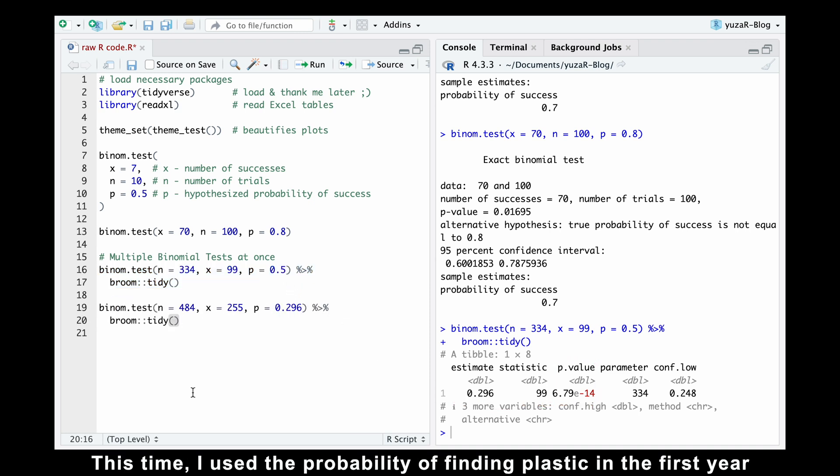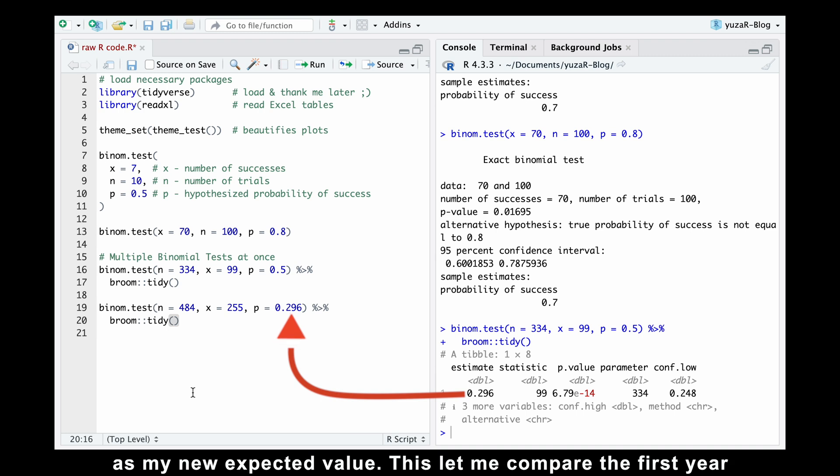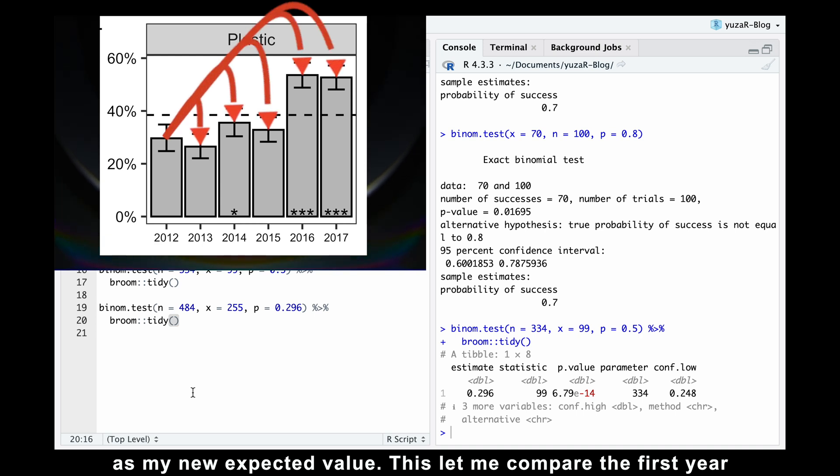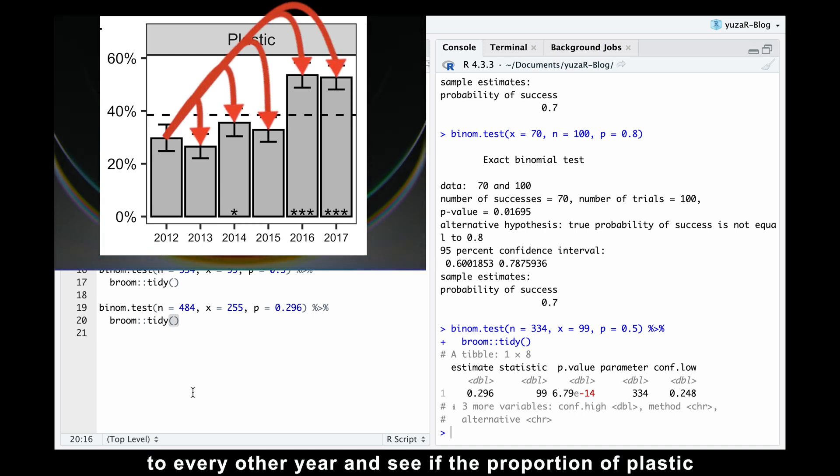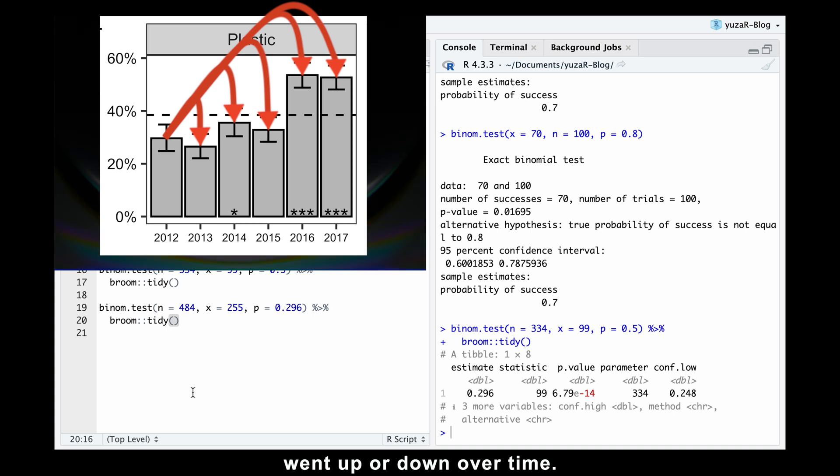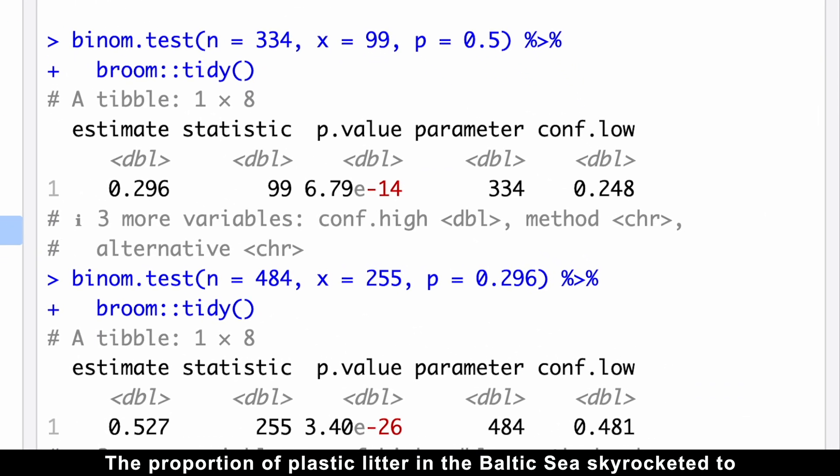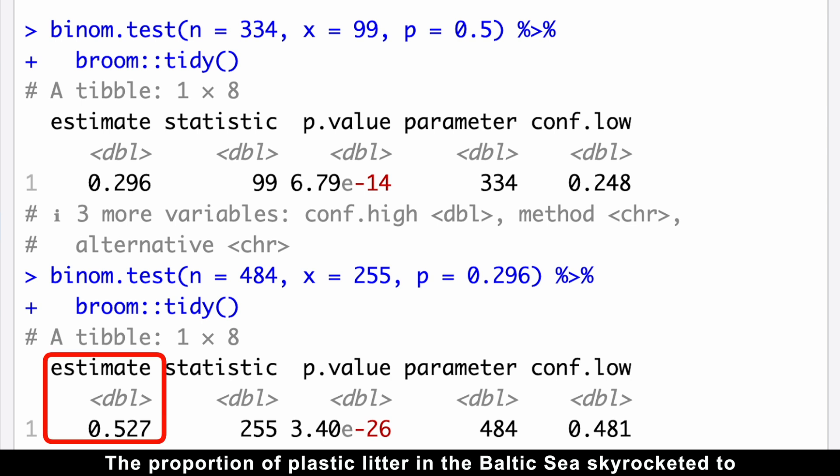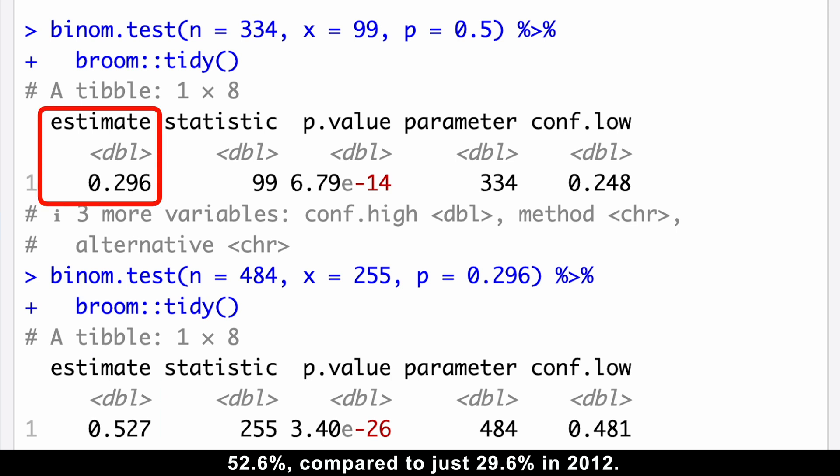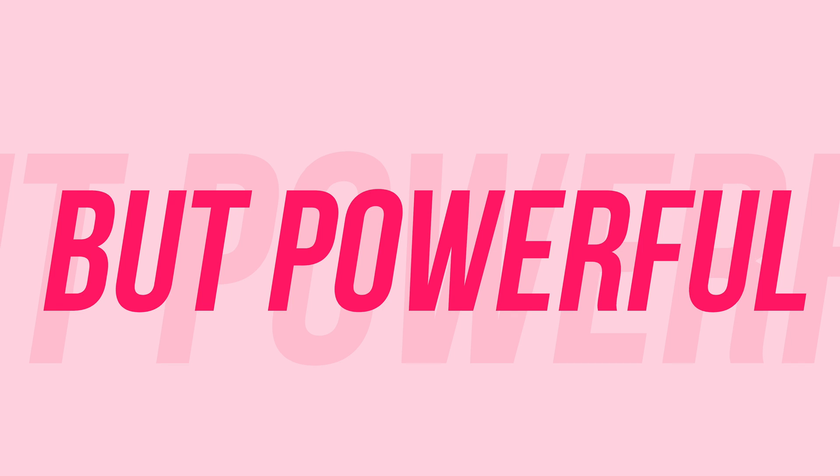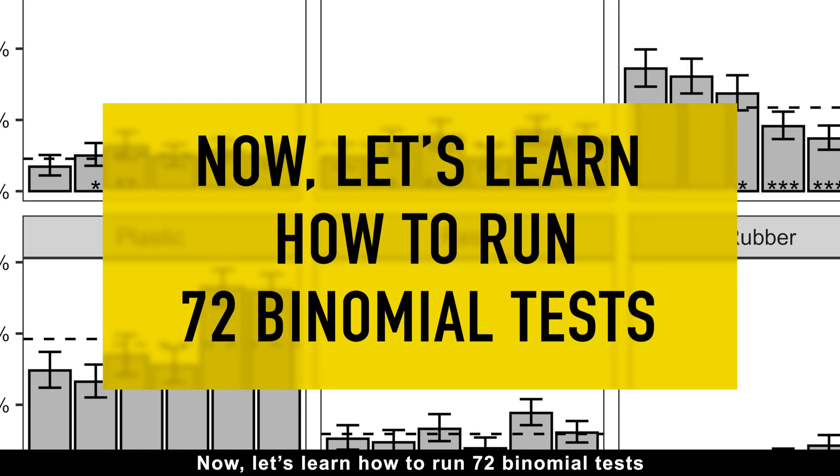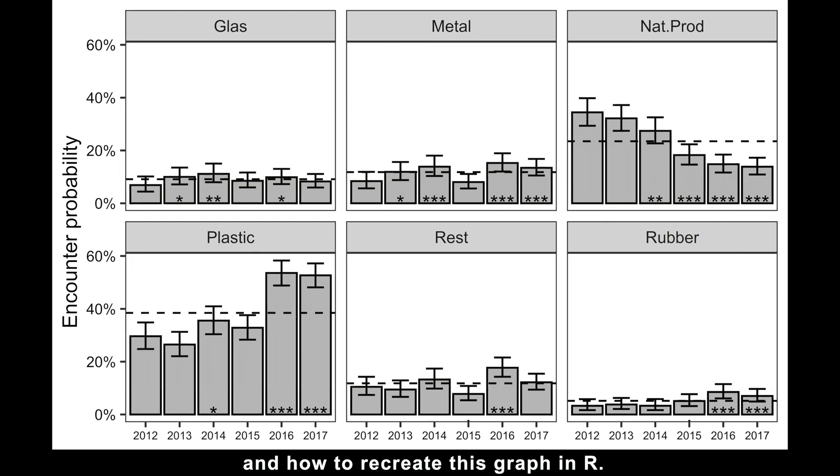This time, I used the probability of finding plastic in the first year as my new expected value. This let me compare the first year to every other year and see if the proportion of plastic went up or down over time. For instance, check out the last year of the study, the proportion of plastic litter in the Baltic Sea skyrocketed to 52.6%, compared to just 29.6% in 2012. Super simple but powerful, right? Now, let's learn how to run 72 binomial tests and how to recreate this graph in R.